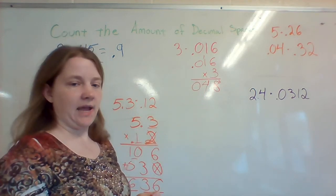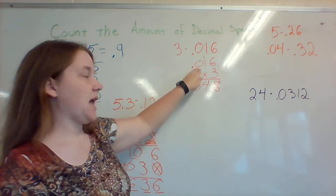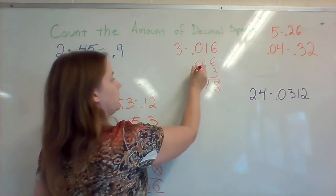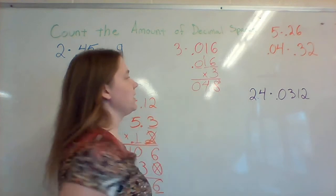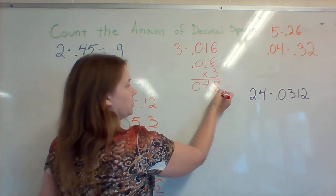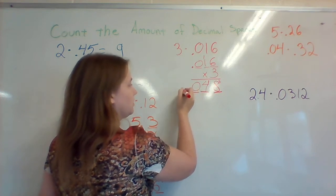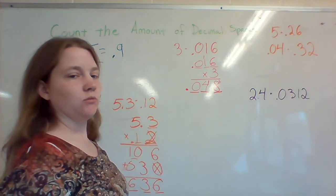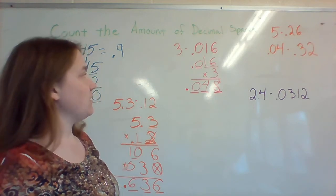Now I'm going to count the amount of numbers after the decimal in the problem. 1, 2, 3. So in my answer, I'm going to start from the end and I'm going to go 1, 2, 3 spaces over. So my final answer will be 48 thousandths.